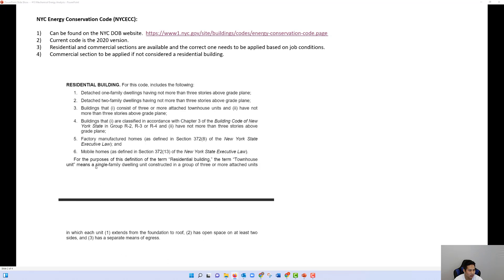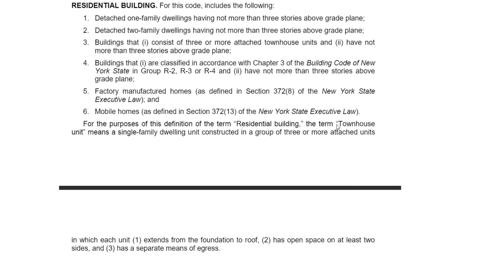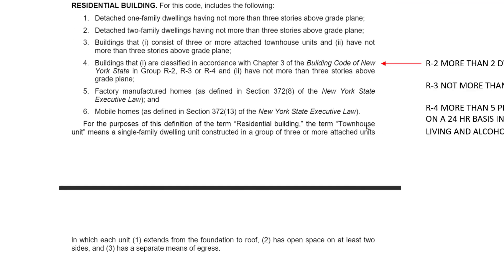A townhouse is defined as a single-family dwelling unit constructed in a group of three or more attached units, where each unit extends from foundation to roof, has open space on at least two sides — usually front and back — and has a separate means of egress.